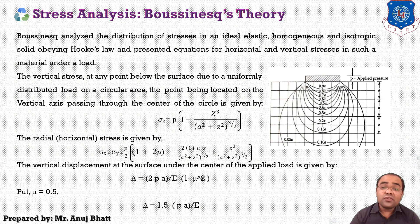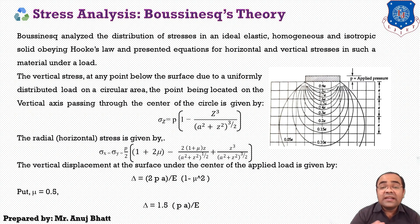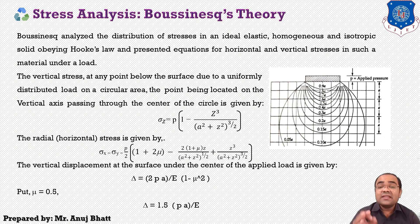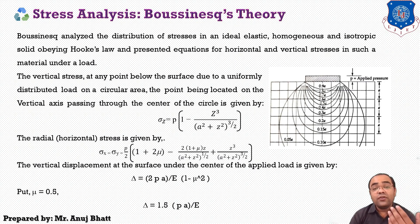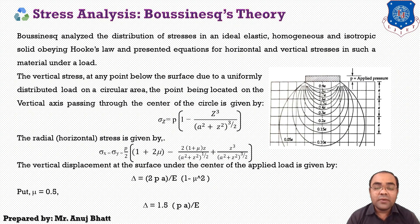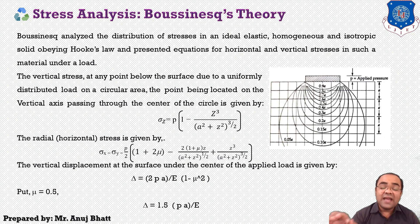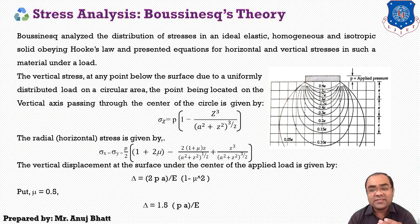Taking the modulus of elasticity of the subgrade soil and evaluating the vertical displacement at the surface, where z equals zero, we get the vertical displacement delta as 1.5 times p times a upon E. Remember: the displacement value is delta, stresses are sigma z and sigma x and y, where sigma x equals sigma y is the horizontal or radial stress, and sigma z is the vertical stress.